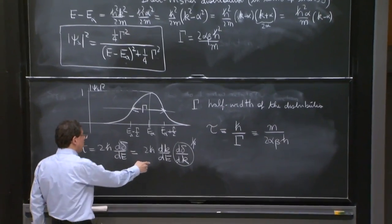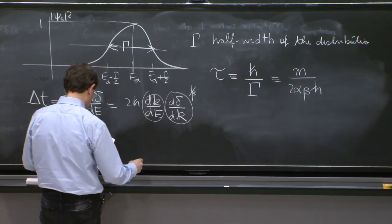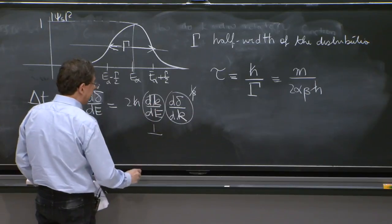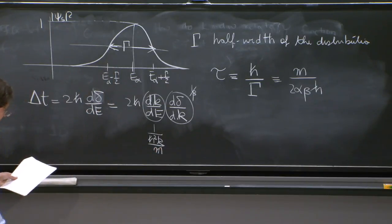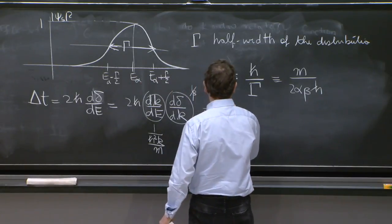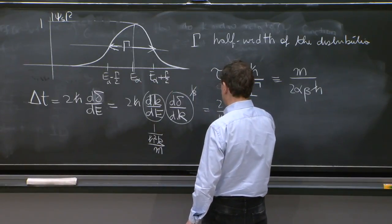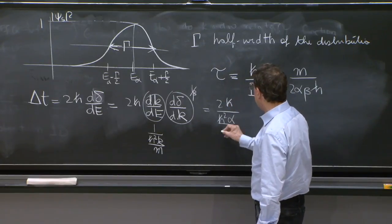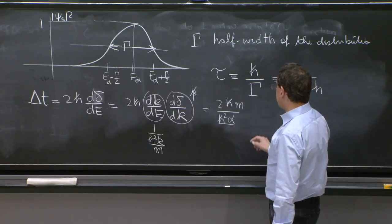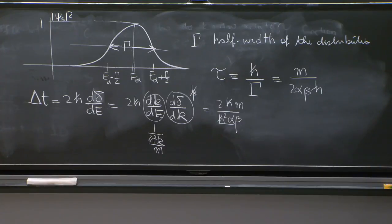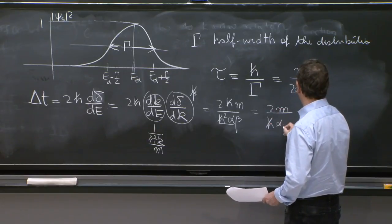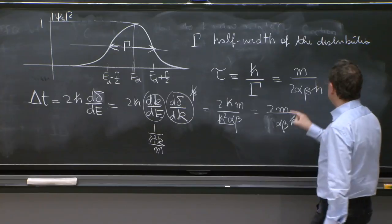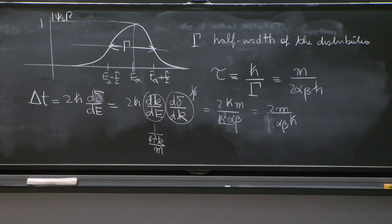This thing is also easily calculated, because this is 1 over d e d k, which is h-bar squared k over m. And therefore, what do we get? 2 h-bar divided by h-bar squared k. So that's alpha over n. And d delta d k is a beta. So what do we get here? Delta t is 2m over h-bar alpha beta. And compare with this one is 4 times tau.